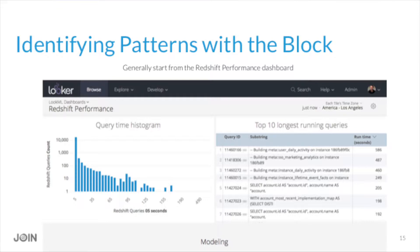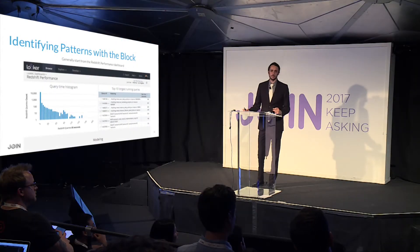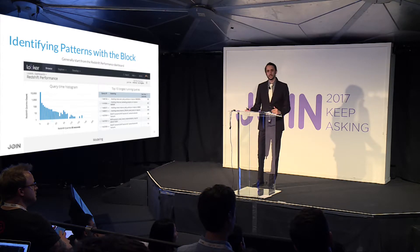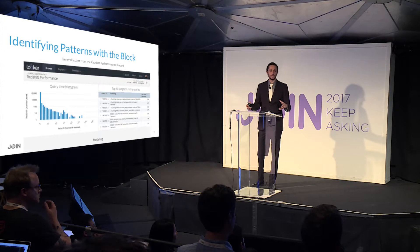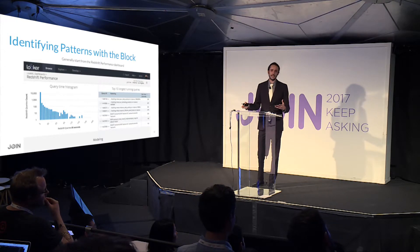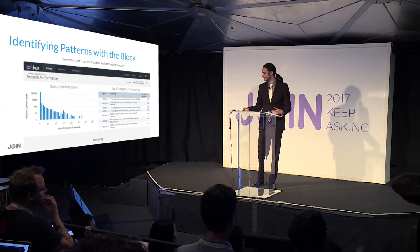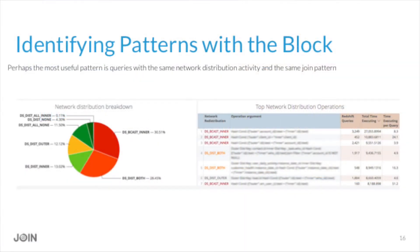Identifying patterns is what the block helps you do so you can prioritize your time spent optimizing your cluster. That generally starts from the performance optimization dashboard, which groups queries into cohorts and patterns so you can see those trends. Two tiles in particular on this dashboard are going to be the most useful.